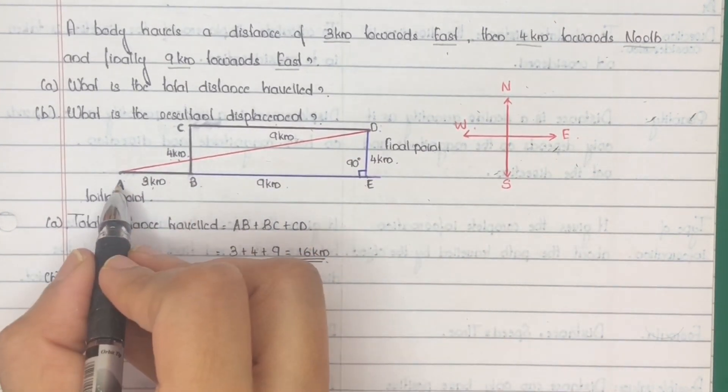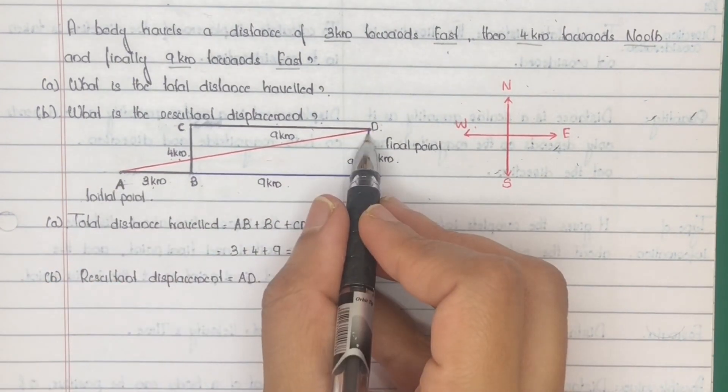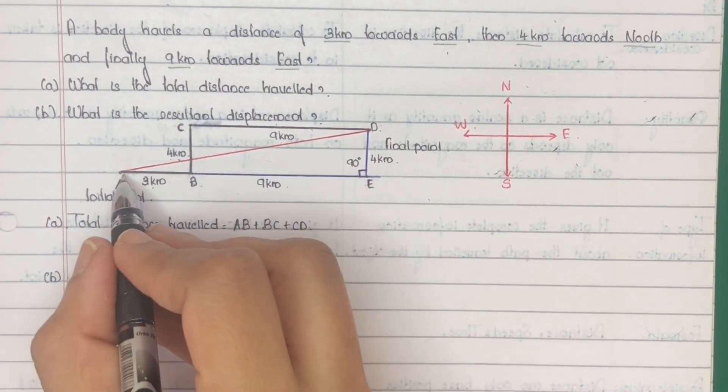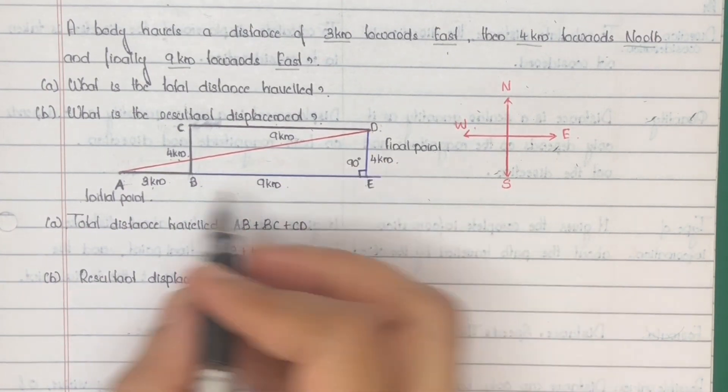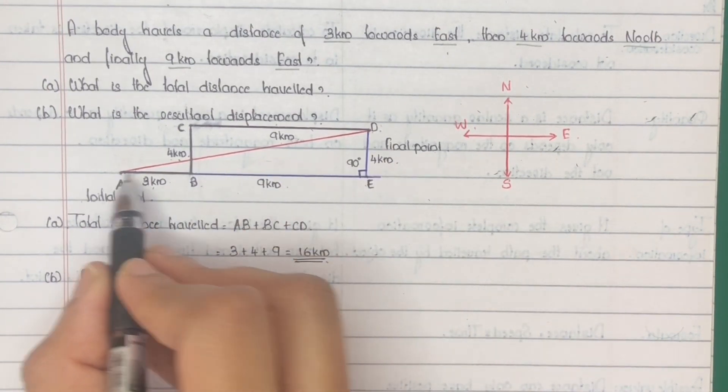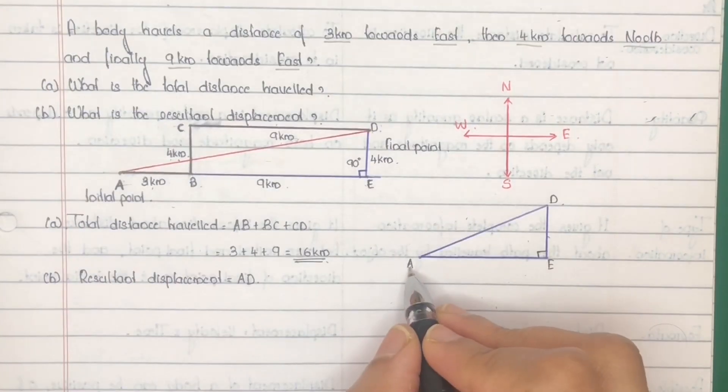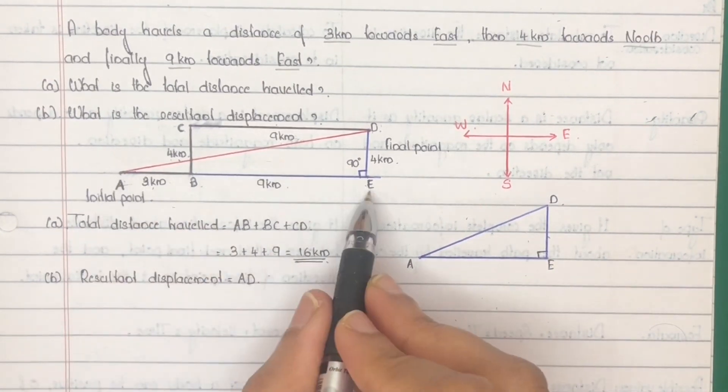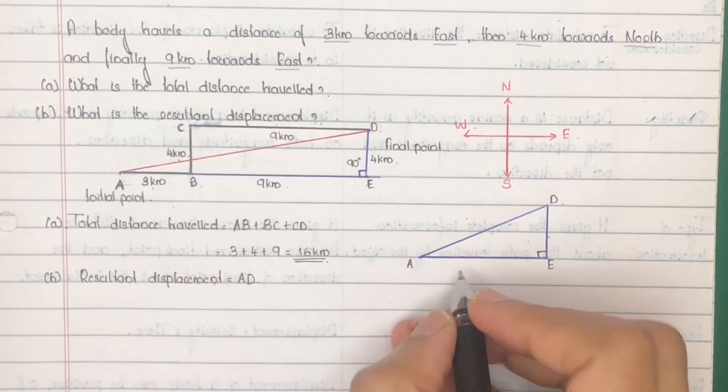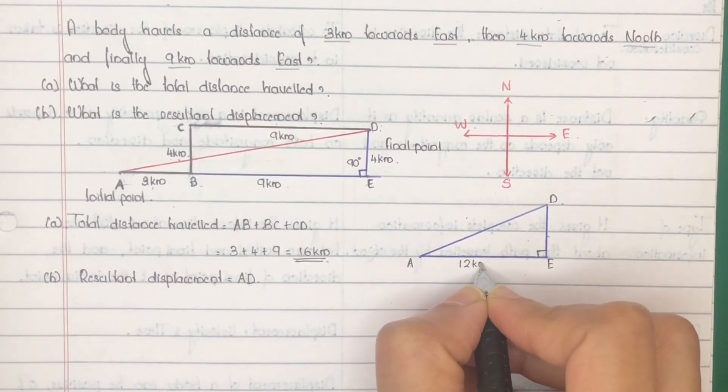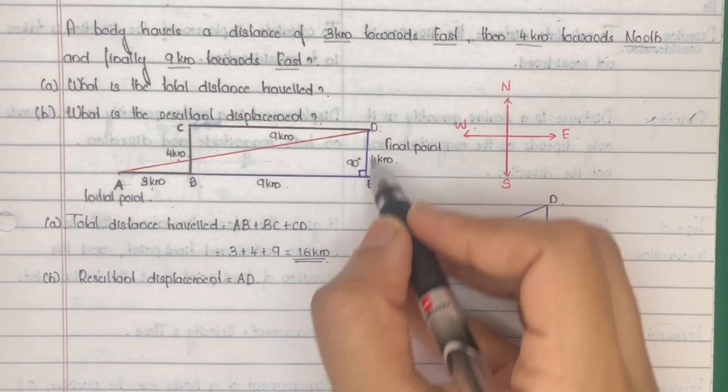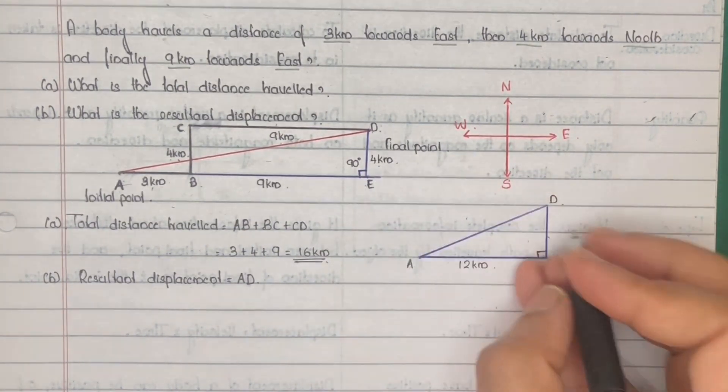Now consider this right-angled triangle AED and by applying Pythagoras theorem, you can find out the value of AD. AE is equal to 3 plus 9, which is 12 km. DE is equal to 4 km. Now find AD.